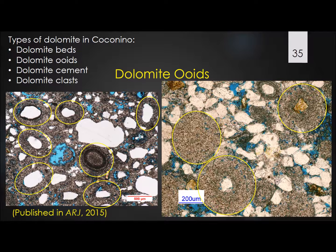We found dolomite cement in various places as well. So we found four types of dolomite, and these are in very widespread places around the formation. They just don't occur in localized areas or along the edge of the formation — they occur in many, many places.